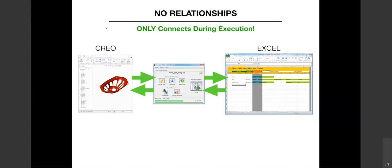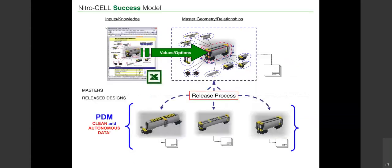The way NitroCell works is very simple. There are no dependencies and no relationships between Creo models and the Excel file — no dependent relationship, no object link, nothing. It's all on-demand and executes only when you press the button. Excel sits on one side, Creo sits on the other side, and NitroCell sits in the middle, tying them together when you want them to, and disconnecting from both when you're done. You can do some pretty amazing things, which I'll show in an example or two.